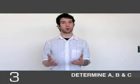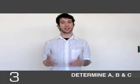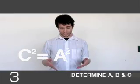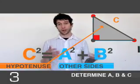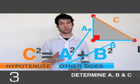Now let's take a minute to analyze the Pythagorean theorem. The theorem says that C squared is equal to A squared plus B squared. Now C represents the hypotenuse, while A and B represent the two other sides of the right triangle.